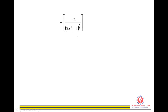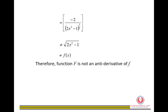After applying the quotient rule and simplifying, we get −2 / (2x² − 1)^(3/2). This does not equal √(2x² − 1), which is f(x). Therefore, F(x) is not the anti-derivative of f(x).